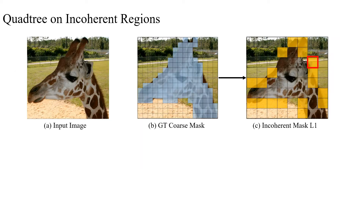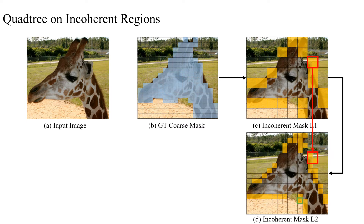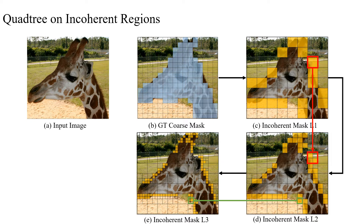Given an input image and using its ground truth coarse mask, we can compute the first level of the incoherent mask. Then we can further break down the quadtree nodes from L1 to L2, and from L2 to L3, constructing a quadtree with three levels of incoherent nodes.